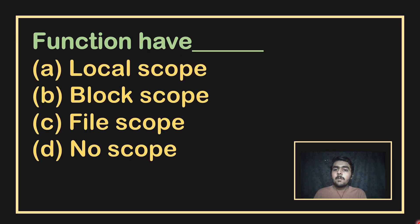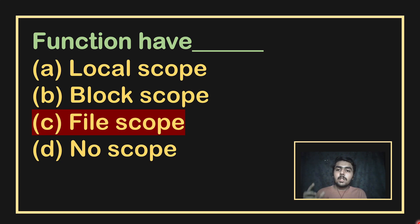Next, what scope do functions have? The options are local scope, block scope, file scope, and no scope. The answer is file scope. A function defined in one file is visible within it. Local means that one function is visible within itself.